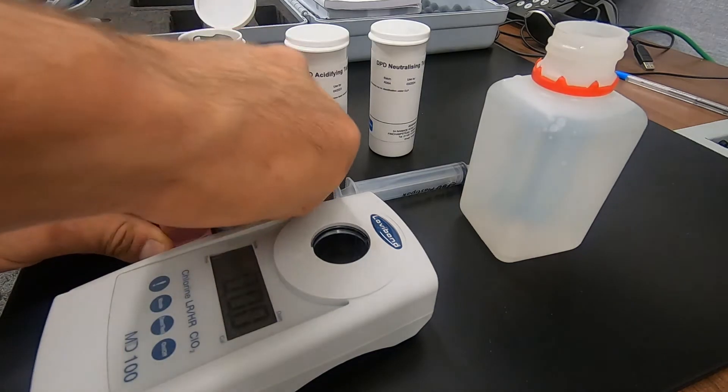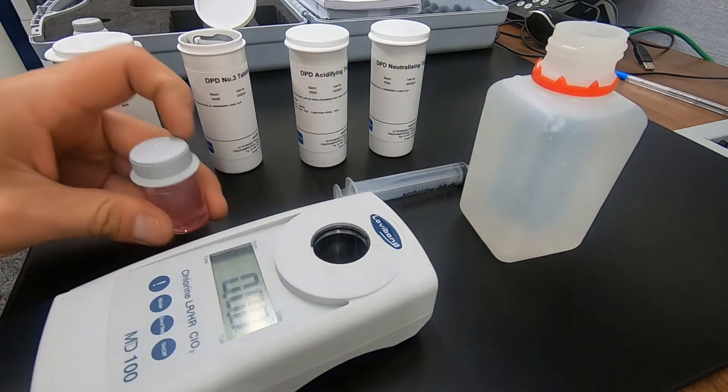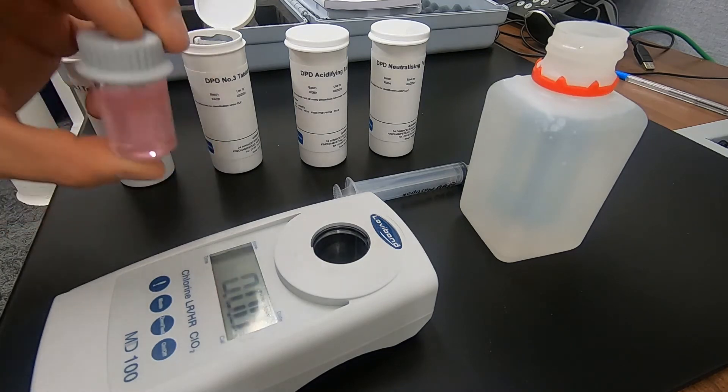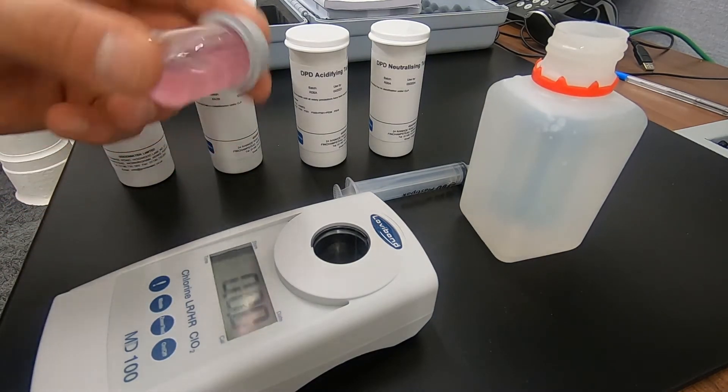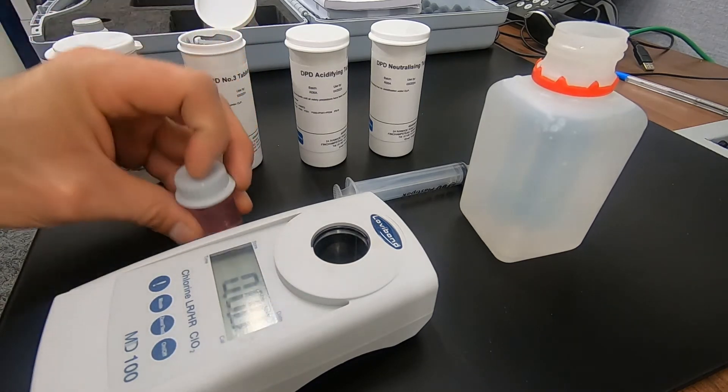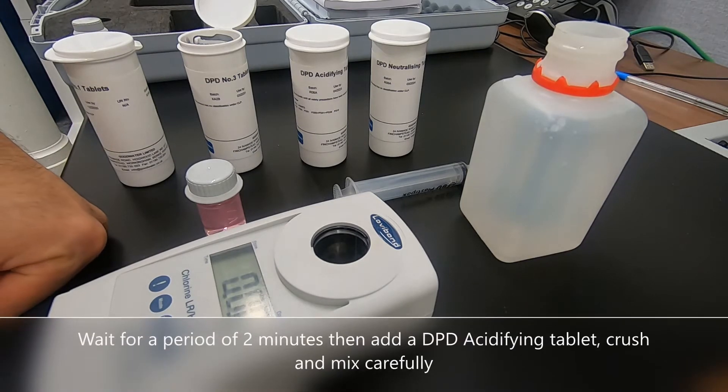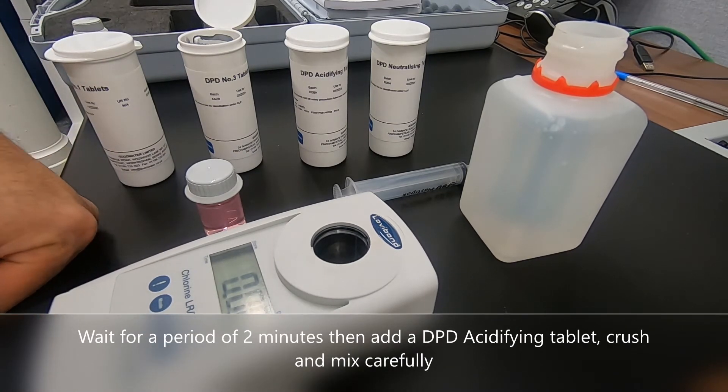Take the stirring rod out, place the cap on it, invert five or ten times. And at this stage we have to leave this for two minutes for the reaction to carry out.